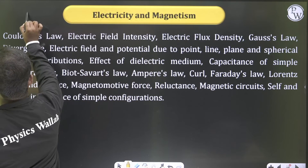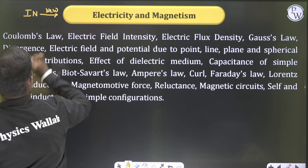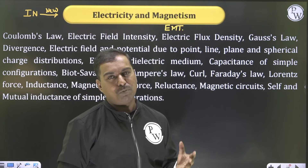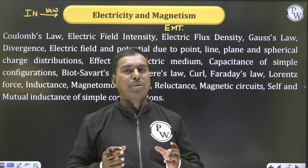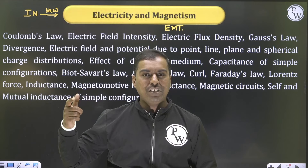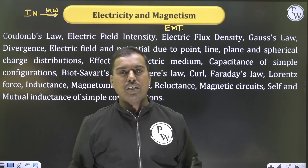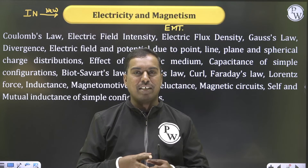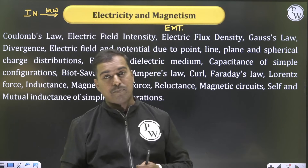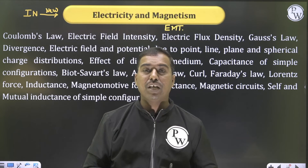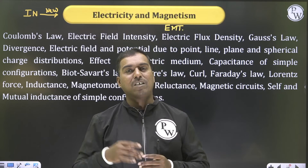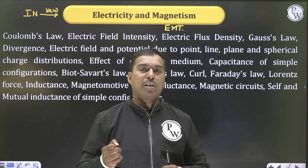For the instrumentation paper, electricity and magnetism is also covered as part of EMT. As per my experience, the questions coming from electromagnetic theory for instrumentation are at a very basic level — this is an opportunity for ECE students. Similarly, machines is an opportunity for electrical students. The instrumentation paper has been designed as a combination of subjects so that electrical students, ECE students, and with some additional effort, even mechanical students, can write the exam — though mechanical students will find it quite challenging unless they have mechatronics-related subjects.